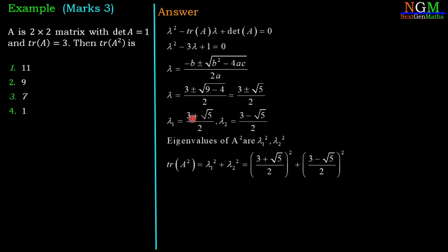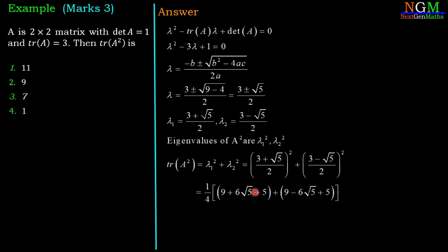So λ₁² = ((3 + √5) / 2)² and λ₂² = ((3 − √5) / 2)². Taking 1/4 as a common factor and expanding: (9 + 6√5 + 5) + (9 − 6√5 + 5) = 18 + 10 = 28. Therefore 28/4 = 7, so trace of A² equals 7, which is option number 3 — the correct answer.